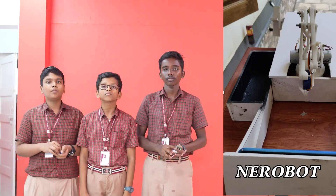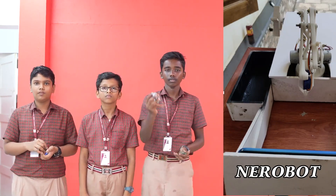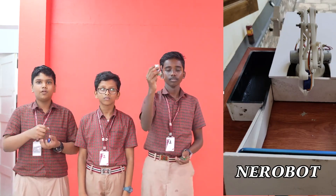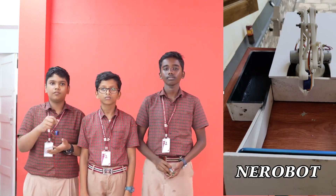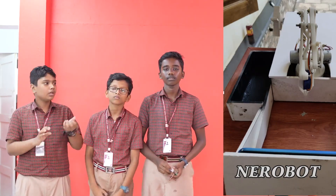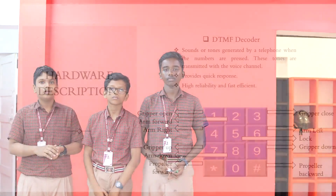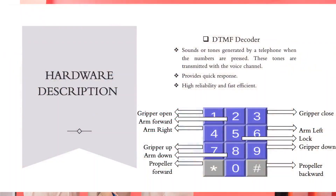A servo motor and servo motor driver, a servo motor and a DTMF decoder. As you can see in this figure, the keyboard of a mobile phone is used to control the movement of the robotic arm as well as the movement of the robotic vehicle. Each key represents different operations of the robot.